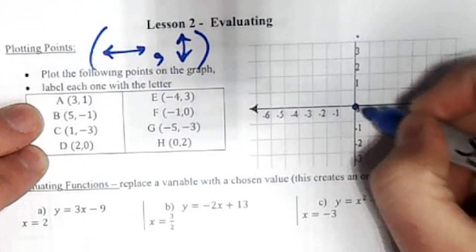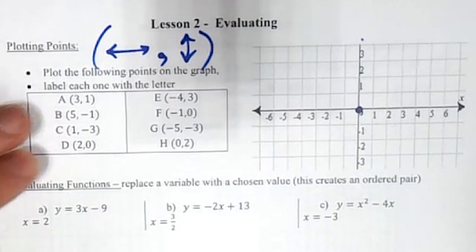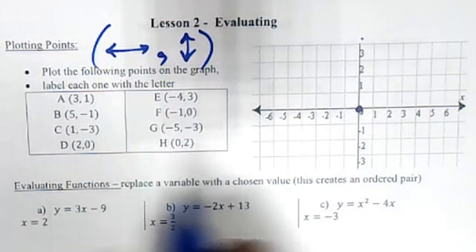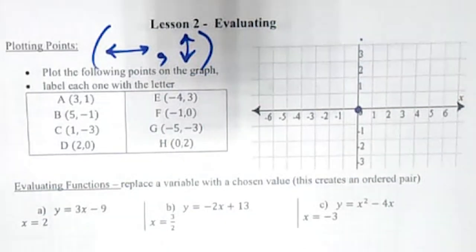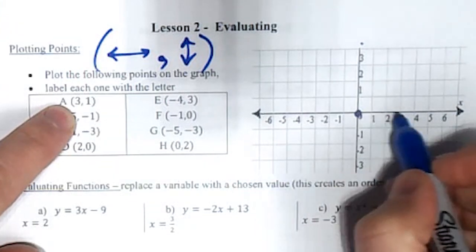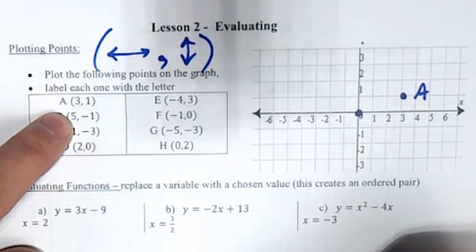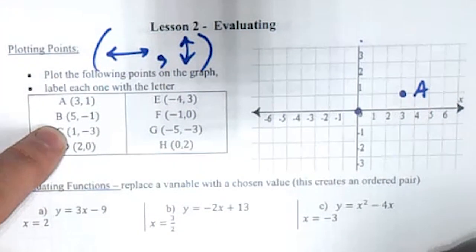We always start at the origin which is zero zero. If it helps you to remember, think of it like going to a library where all the books are all the way to the ceiling and you need a ladder to get to the top. You have to move the ladder sideways, then you can climb to the top. So three one: sideways three positive, one up, and just write the letter beside it. Pause the video, try out the rest of them, and then check the answers when you're done.